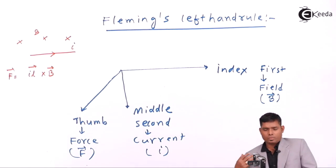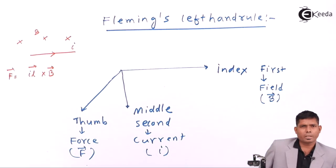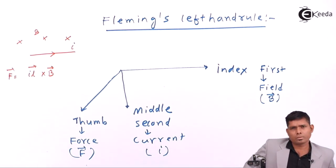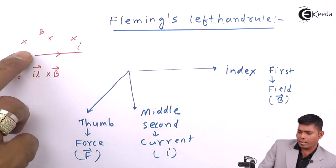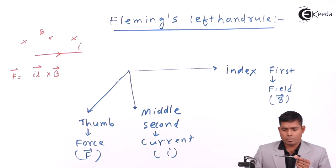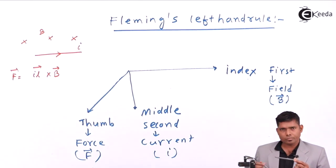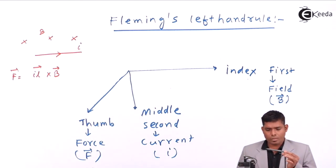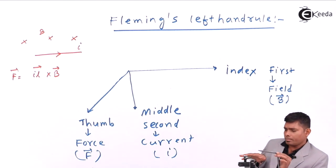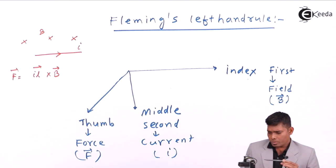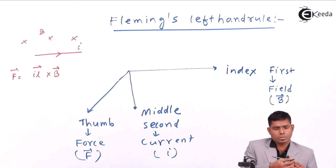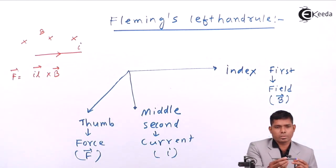If I don't use Fleming's left hand rule, I can also find the direction in which this conductor will move. IL is in this direction, B is into the page, so using the cross product IL cross B, the force will act towards you — in this direction the conductor will move.